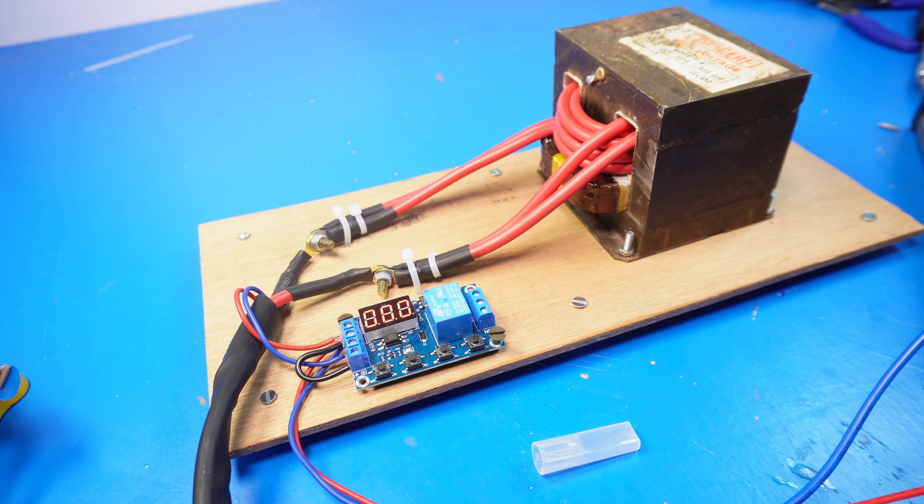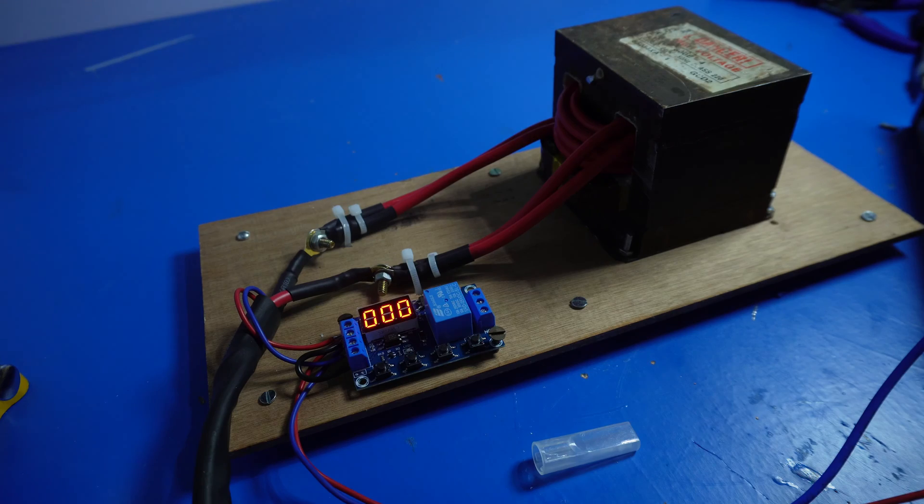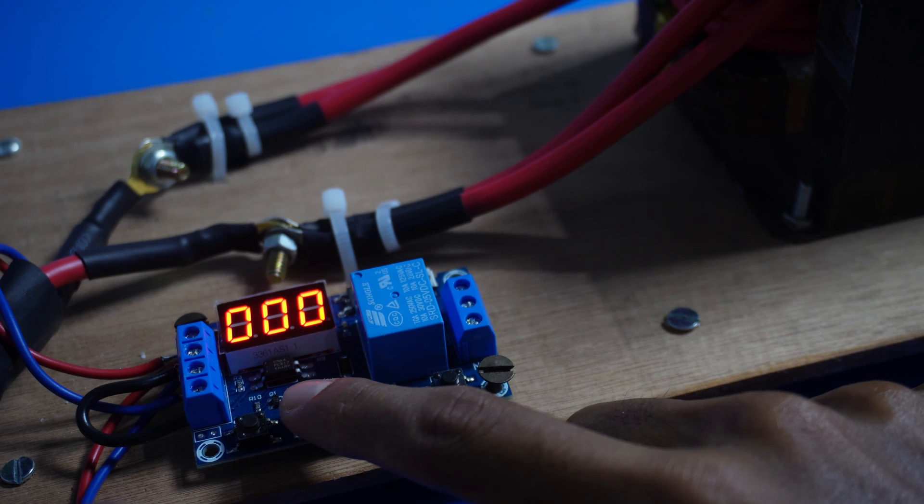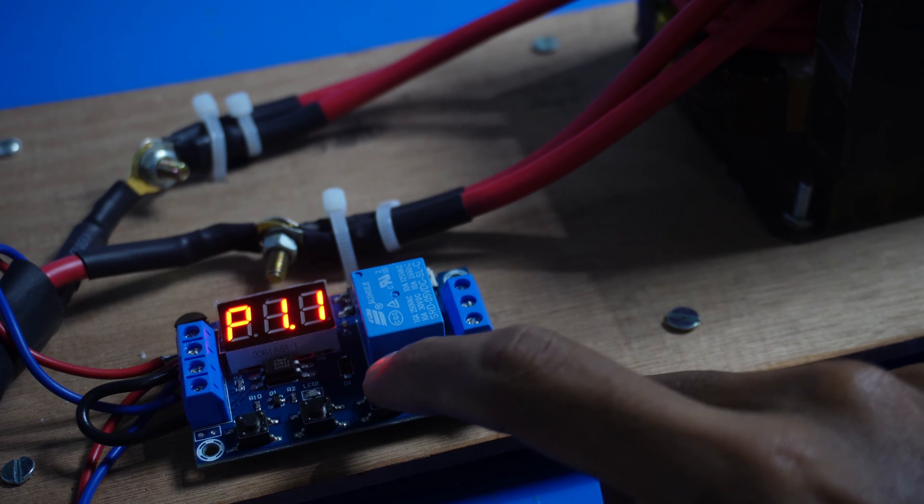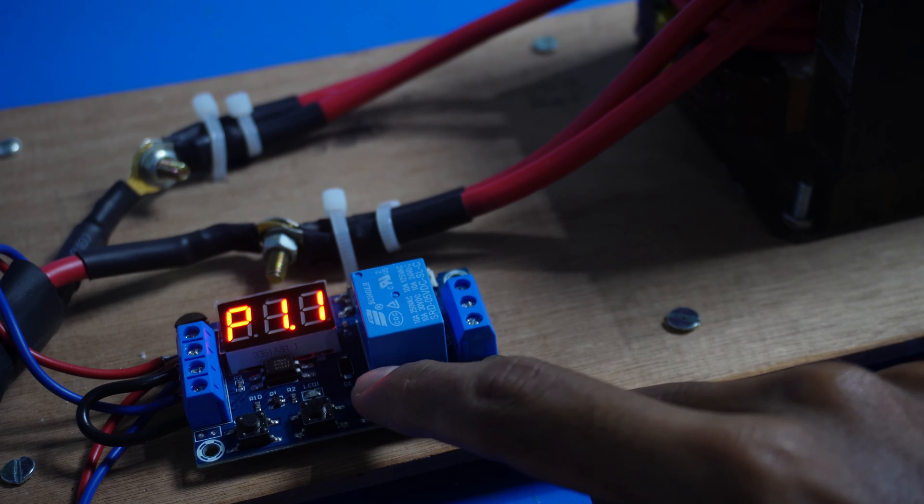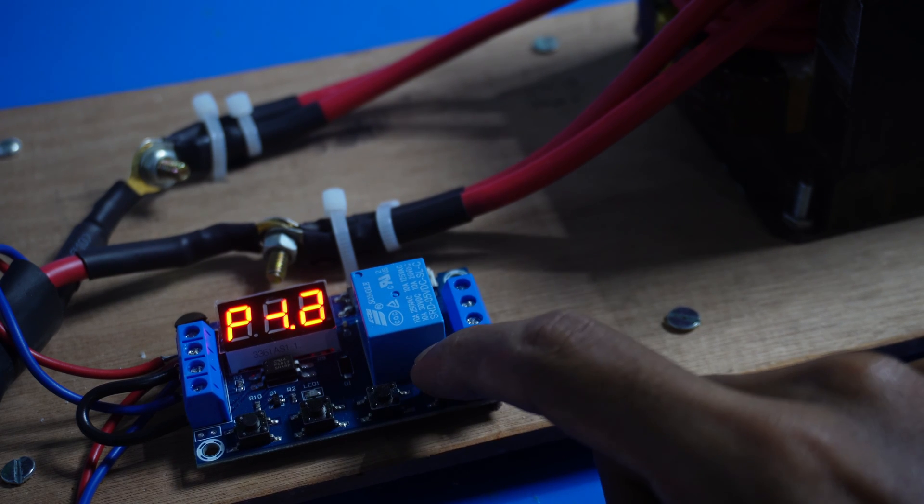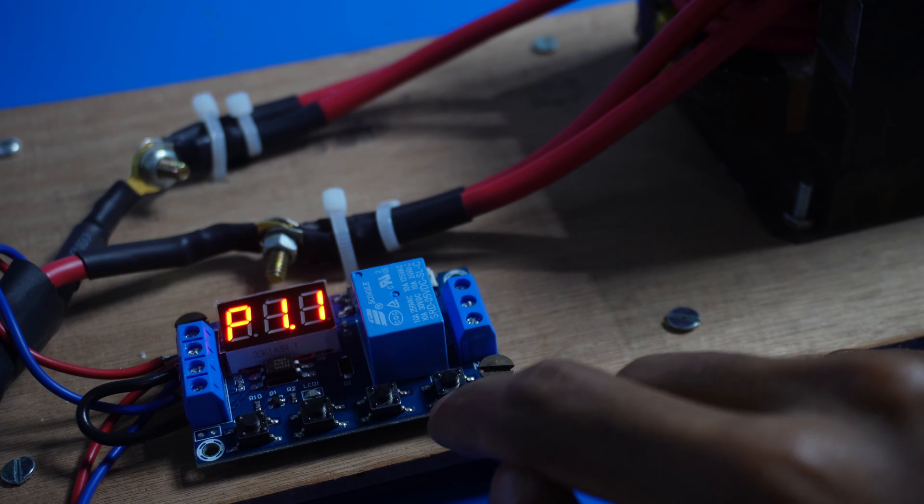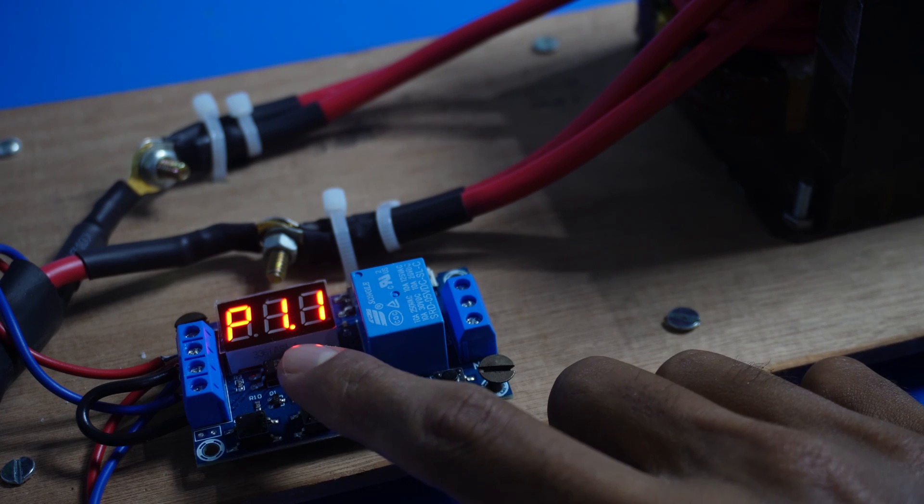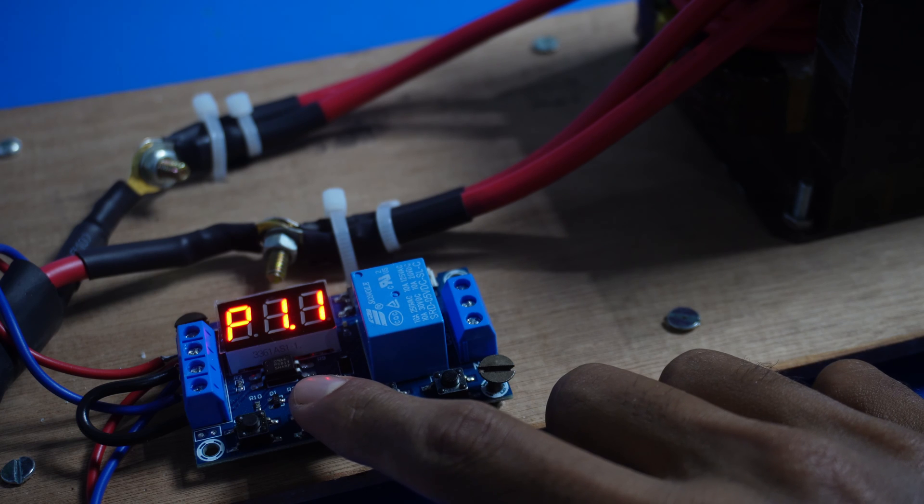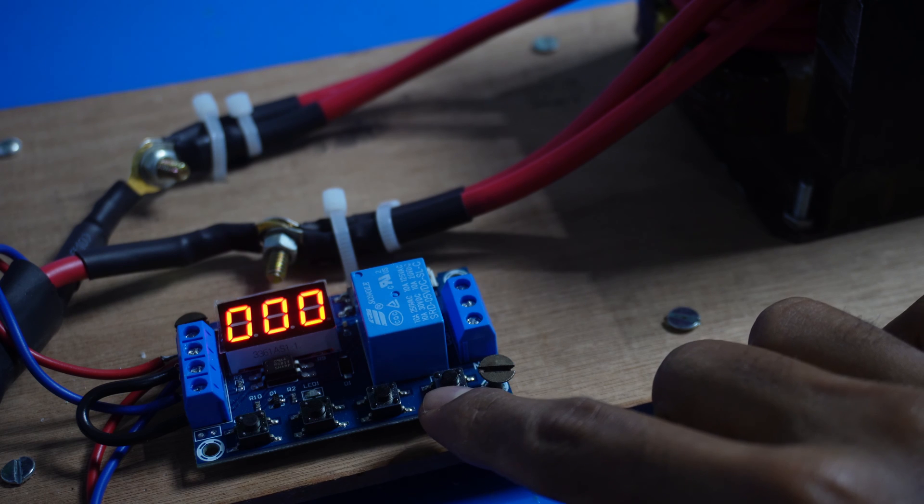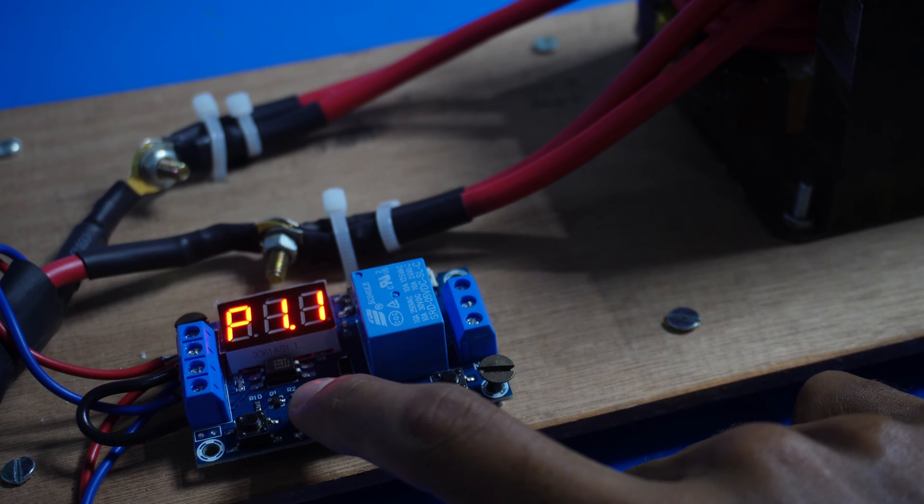Now, I will show you how to program the timing module, which is crucial for controlling how long the current stays on for a good spot weld. Press and hold the second switch for 2 seconds until you see P1.1 displayed. Set it to P1.1 and press the second switch once to confirm. Then, hold the second switch to navigate to the OP function where you can set the timing. I recommend setting it to 0.2 seconds. After setting the timing, press and hold the second switch for 2 seconds to confirm the settings.